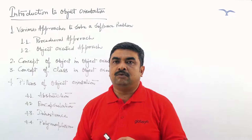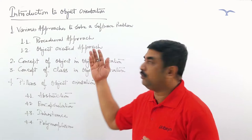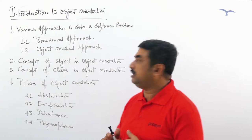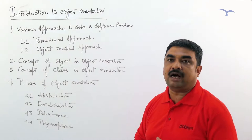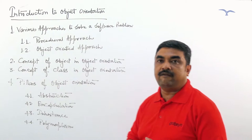At the end of this video tutorial, you will be able to understand the various approaches to solve the software problem. There are two approaches: procedural approach and object-oriented approach. After understanding these approaches, you will understand the concepts of objects and class, and lastly you will know the pillars of object orientation, which are abstraction, encapsulation, inheritance and polymorphism.